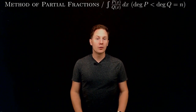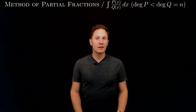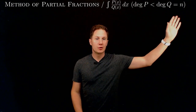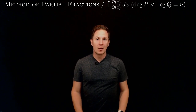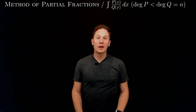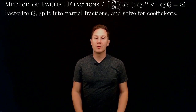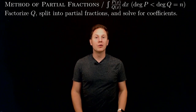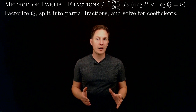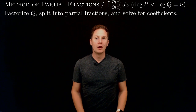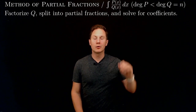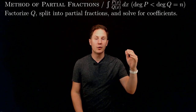The method of partial fractions can be used to evaluate the integrals of ratios of polynomials p over q, where the degree of the numerator p is less than the degree of the denominator q, which we denote by n. The basic idea is that we write q, the denominator, in factorized form, which allows us to split p over q into the sum of simpler partial fractions, for each of which we need to determine what coefficients go in their numerator.